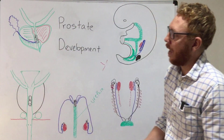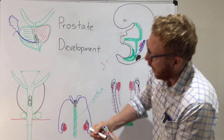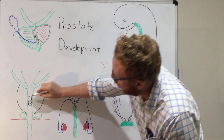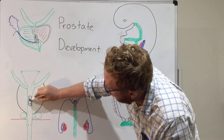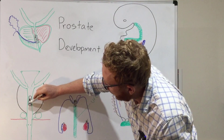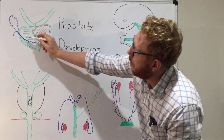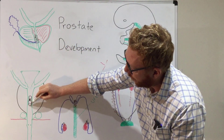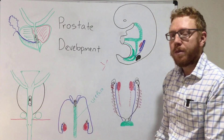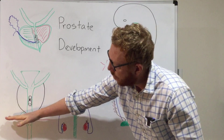Coming down to this image — a frontal cut, looking anteriorly — you can see the utricle here, which is a derivative of the Müllerian system. This ductal system coming from the prostate proper, and these two blue dots here are coming from the ductus deferens and seminal vesicle — these form the ejaculatory duct, entering here and here. Slightly below that is the last ductal system, the bulbourethral glands, which also secrete their contents into the urethra below the diaphragm.